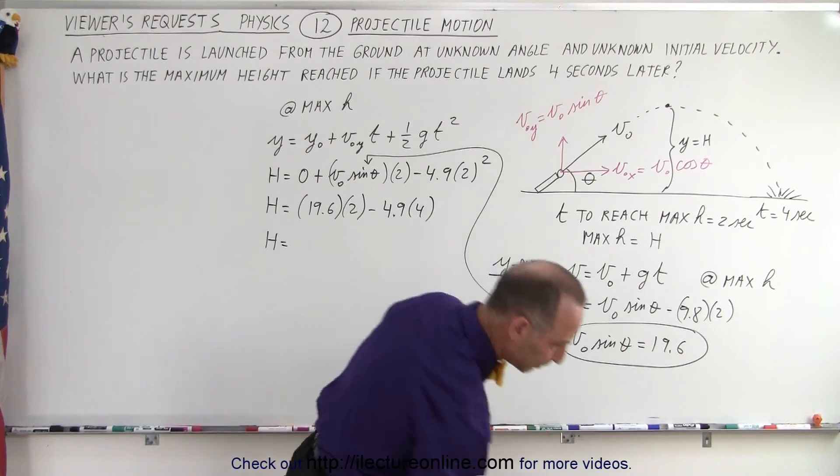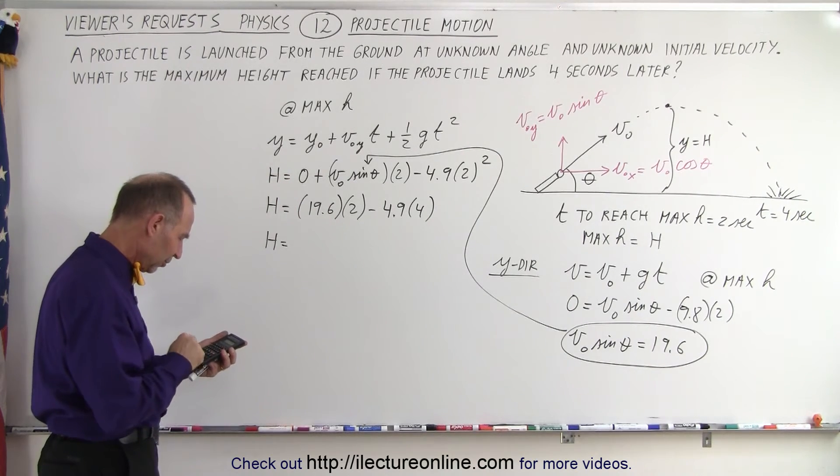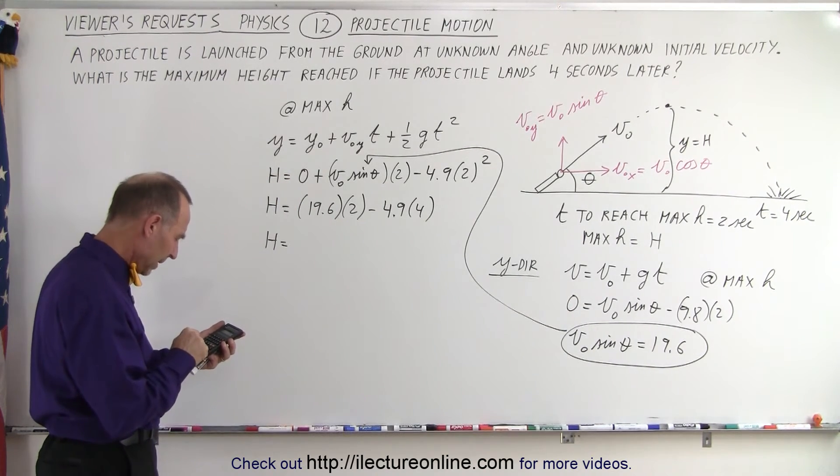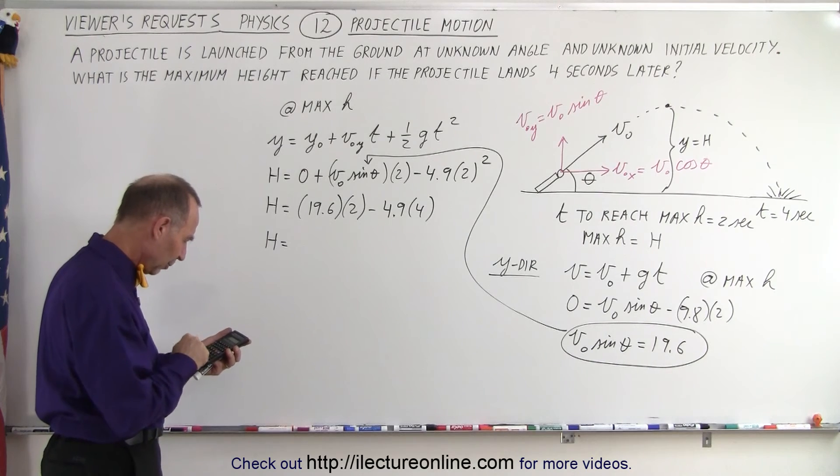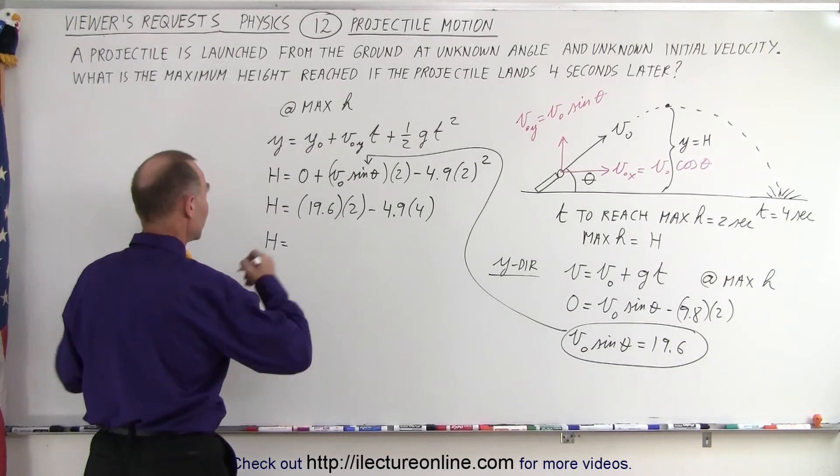So h equals, and now we need a calculator. We have 19.6 times two minus 4 times 4.9, and we get 19.6 meters.